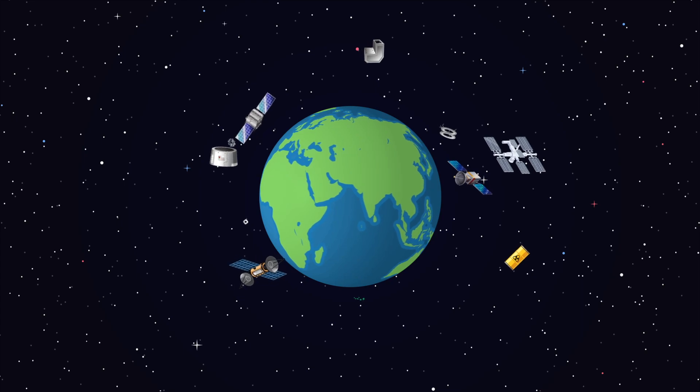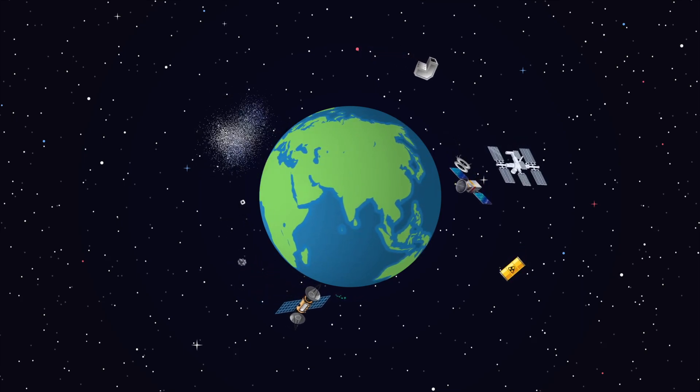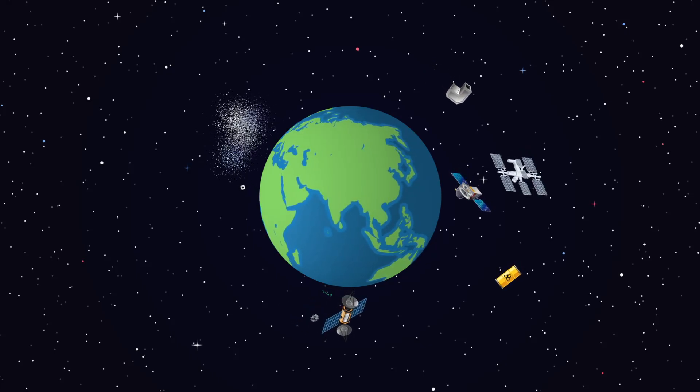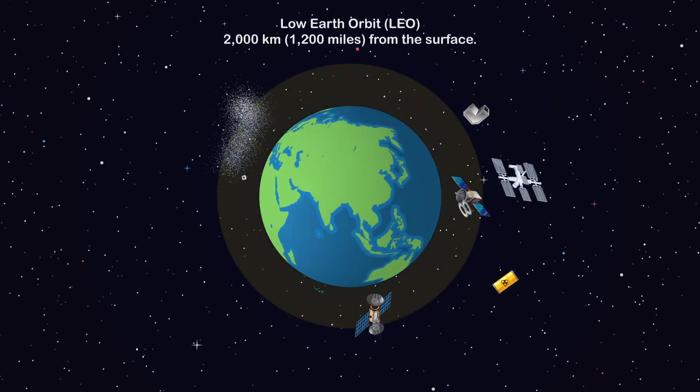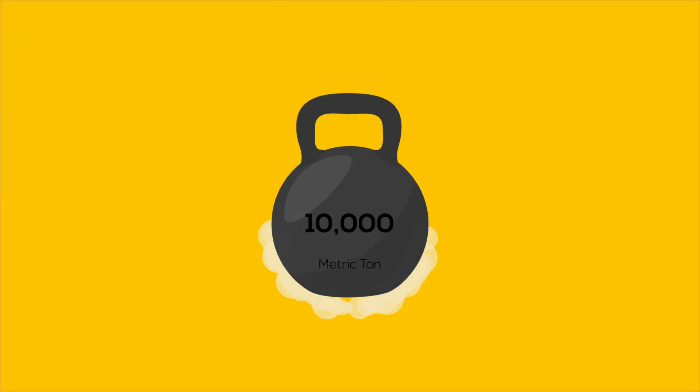A lot of debris come from explosions of objects. Parts of rockets that end up in orbit are a significant source of the debris. Much of this is in low Earth orbit.